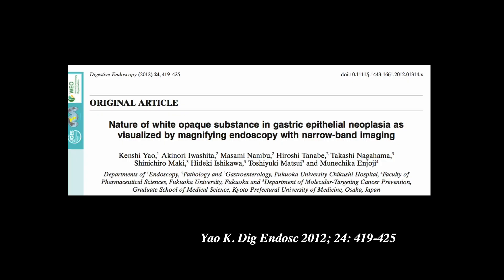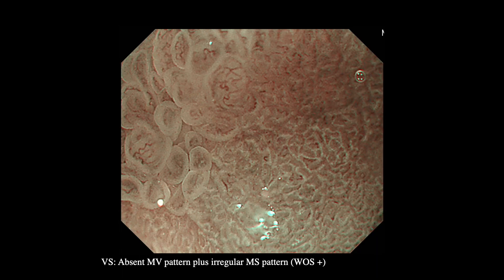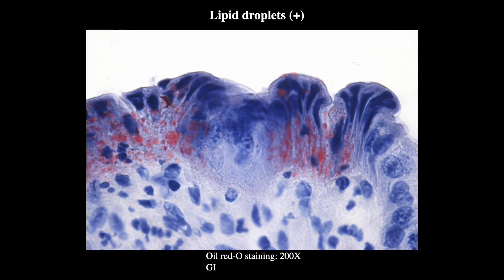After that, I investigated the nature of the White Opaque Substance. In this report, I showed the nature of the White Opaque Substance in gastric neoplasia as visualized by magnifying endoscopy with narrowband imaging in 2012. This is a carcinoma of differentiated type. When we magnified with narrowband imaging, there is a clear demarcation line, and inside the demarcation line we can visualize White Opaque Substance which obscures the microvascular pattern. When we investigated oil-red-O staining, it clearly shows the White Opaque Substance is corresponding to the accumulation of micro-lipid droplets.